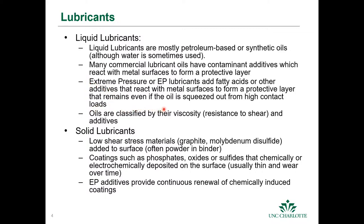Oils are classified by their viscosity, which is essentially a measure of their resistance to shear. Solid lubricants such as graphite and molybdenum disulfide are low-shear-strength materials that can be added to the surface in powder or binder form. There are also coatings such as phosphates, oxides, and sulfides that are chemically or electrochemically deposited on the surface. Extreme pressure additives provide continuous renewal of chemically induced coatings — as material is worn from the surface, it's re-deposited from additives that remain in the material.